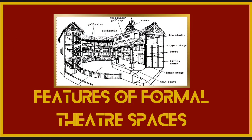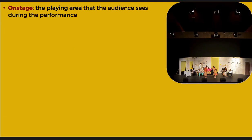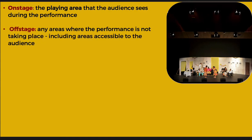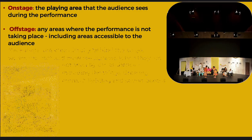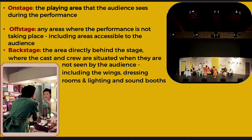Now we're going into the features of formal theater spaces. The diagram you see in the picture is actually of Shakespeare's Globe Theater. Onstage, also called the playing area, is the part of the stage that the audience sees during the performance and the parts that the performers have available to use and move around. Offstage, of course, are any areas that are not where the performance is taking place. However, offstage areas also include areas that are accessible to the audience, whereas backstage refers specifically to the areas just offstage — the back of the stage, the sides — that only the cast and crew can move about in.